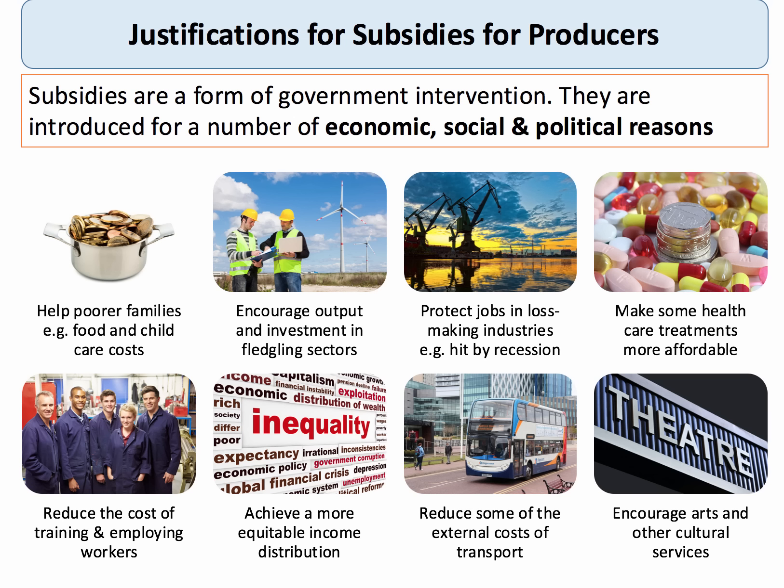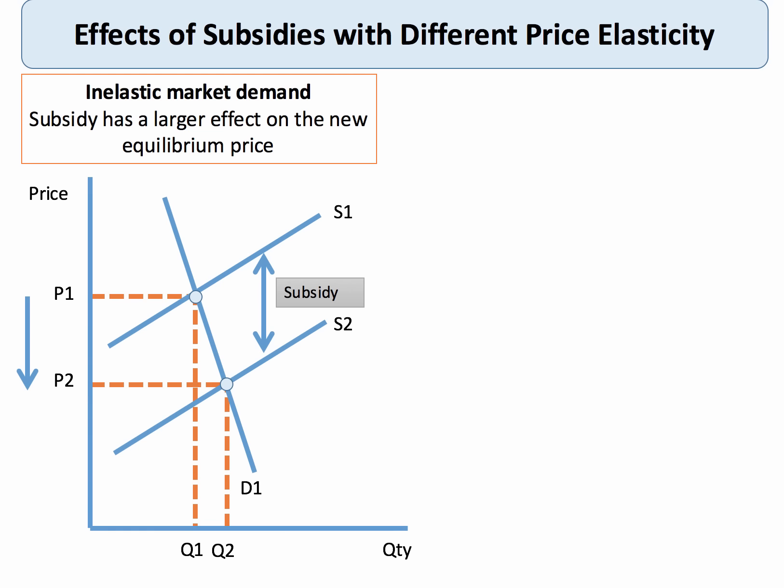Governments may regard subsidies as a way of achieving a more equitable distribution of income and access to basic goods and services. There might also be justification in trying to reduce externalities associated with transport, or to subsidize merit goods such as the arts and cultural services. Subsidies often have plausible justifications — the key is to analyze the likely effectiveness and efficiency of a subsidy as a form of intervention.